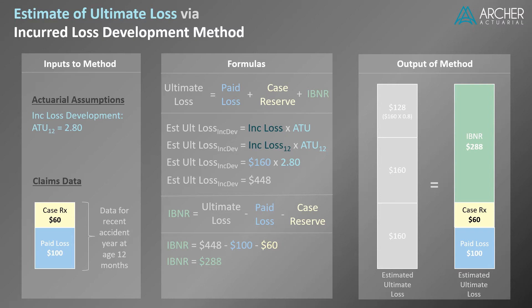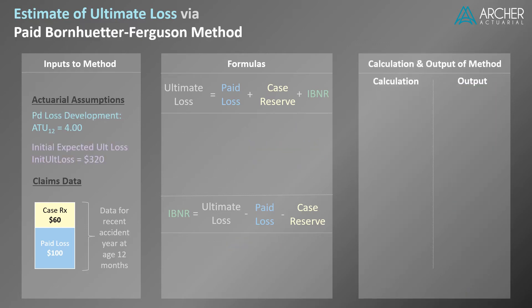Overall, the mechanics of the development methods are quite simple. Let's move ahead to the BF methods and see how they compare. The paid version of the BF method uses paid losses and two actuarial assumptions: a paid loss development assumption and an initial expected ultimate loss. Although we are not going to discuss the source of the latter assumption, be aware that it is very influential on the results and should be sourced with care. Estimated ultimate loss using the paid BF method equals paid loss plus the quantity (1 minus 1 over the age-to-ultimate factor) times the initial expected ultimate loss.